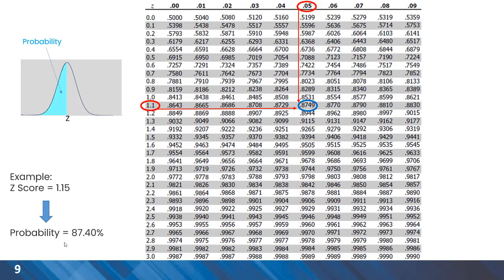As you can see, the tables look like this. We can find the value for a z-score using the link between rows and columns of the table. As an example, the z-score is 1.15 and the probability associated with that can be read from the table — it is 87.4%.